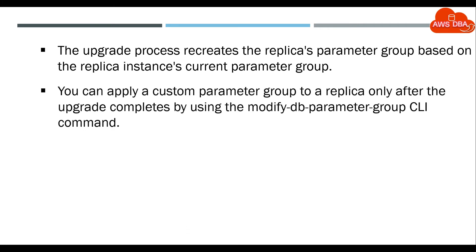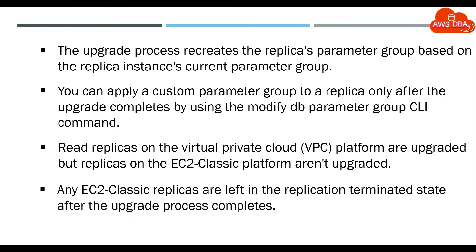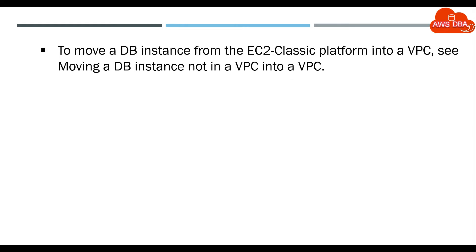You can apply a custom parameter group to a replica only after the upgrade completes, by using the modify-db-parameter-group CLI command. Read replicas on the Virtual Private Cloud (VPC) platform are upgraded, but replicas on the EC2 Classic platform are not upgraded. Any EC2 Classic replicas are left in the replication terminated state after the upgrade process completes. To move a DB instance from the EC2 Classic platform into a VPC, see 'Moving a DB instance not in a VPC into a VPC'.